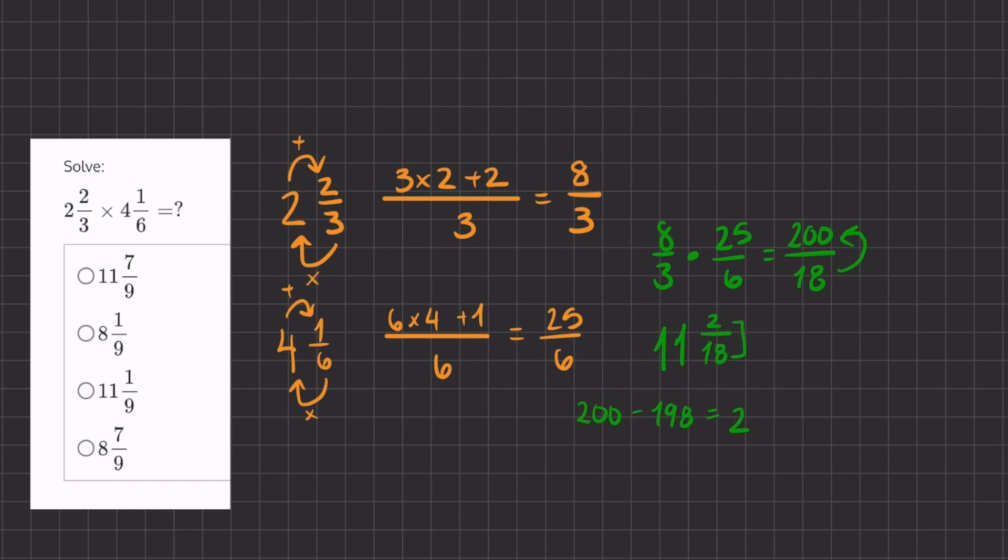Now we still have to simplify this 2 over 18. We'll divide both of them by 2 because they're equally divisible by 2. And our final answer will be 11 and 1/9.